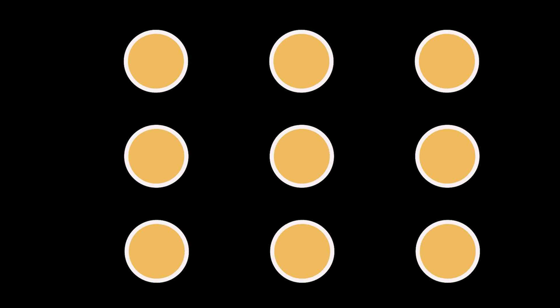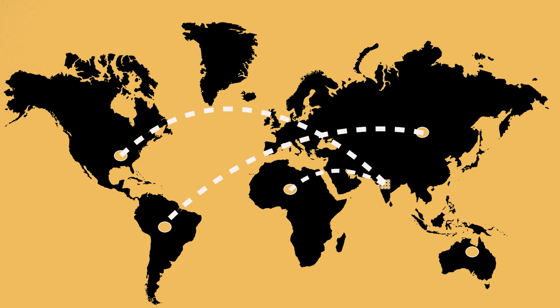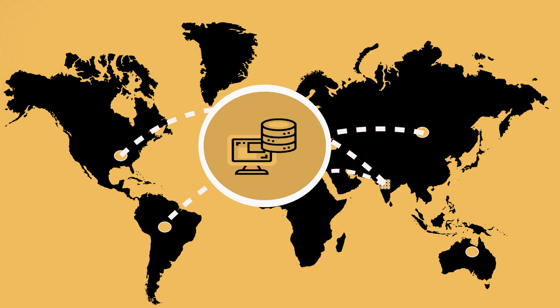Computers that are in a distributed system can be physically close together and connected by a local network or they can be geographically distanced and connected by a wide area network. The goal of distributed computing is to make such a network as a single computer.